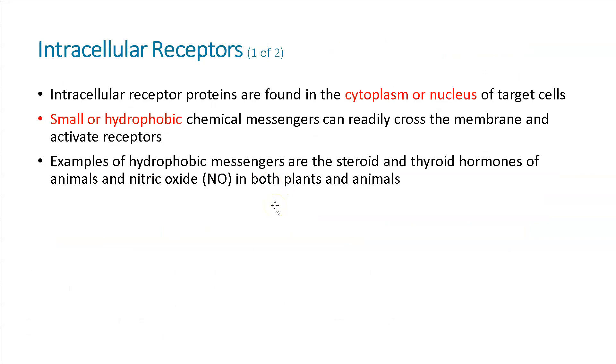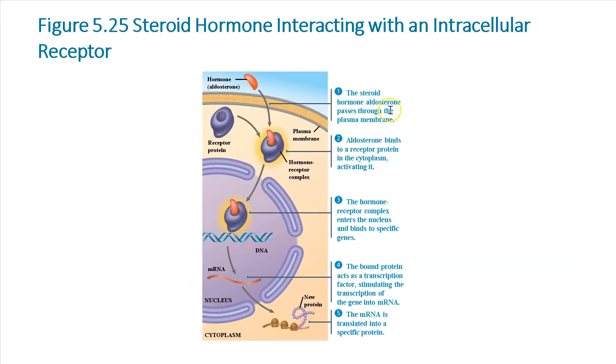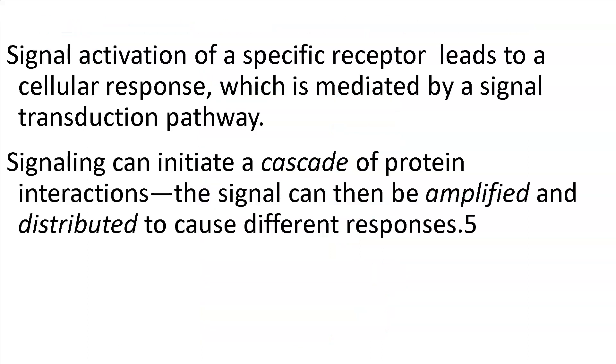So intracellular receptors, we already talked about those, the cytoplasm or the nucleus. So smaller hydrophobic chemical messengers, small or hydrophobic, which means nonpolar. They're afraid of water. So that means nonpolar. Nitrous oxide is an example of that. It does many different things. So again, here's another picture here. So you have your hormone aldosterone. It can go through. Its receptors are on the inside. So now it binds to its receptor, hormone receptor complex that enters the nucleus and binds to specific genes. We turn on the production of different genes, make new proteins. And so that's pretty the difference between steroids and polar ligands where they bind to their receptors.